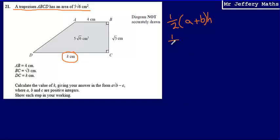So we've got half of the two parallel sides, 4 and K, added together. So half of 4 plus K multiplied by the height, which is root 3. And what I can say about this is that is going to be equal to 5 root 6. This is just an expression for the area of the trapezium. And I know that when I substitute these values into the formula for the area of a trapezium, that it gives me an area of 5 root 6.